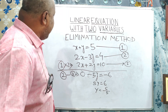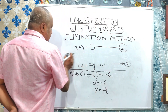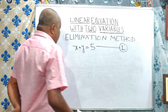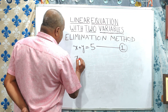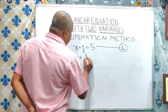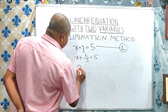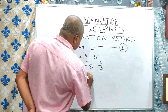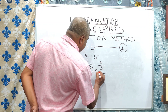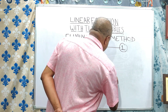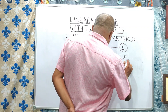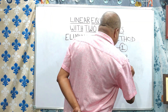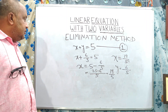So y is equal to 6 by 5. We are getting the value of y from these equations. Now, for getting the value of x, we put the value of y into equation 1: x plus 6 by 5 is equal to 5. So x is equal to 5 minus 6 by 5, which equals 25 minus 6 by 5, that is 19 by 5. So x is equal to 19 by 5 and y is equal to 6 by 5. This is one of the solutions.